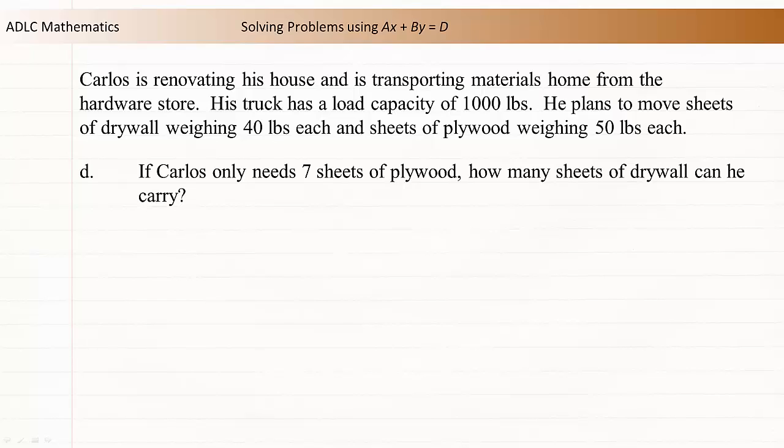There is one more part to the question. If Carlos only needs 7 sheets of plywood, how many sheets of drywall can he carry? To answer this question, we can start with the equation of our relation, 40d plus 50p is equal to 1000. We know there are 7 sheets of plywood, so substitute this value for p. 50 times 7 is 350.